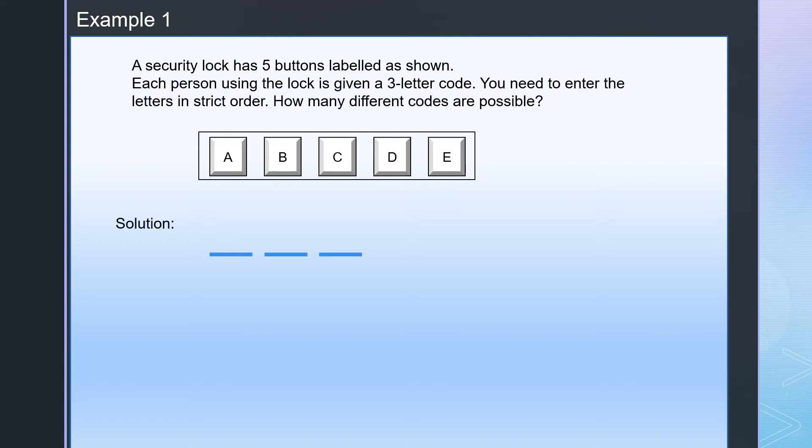So let's draw 3 lines. One line for each letter. For the first letter, you can use A or B or C or D or E. So you have 5 choices.